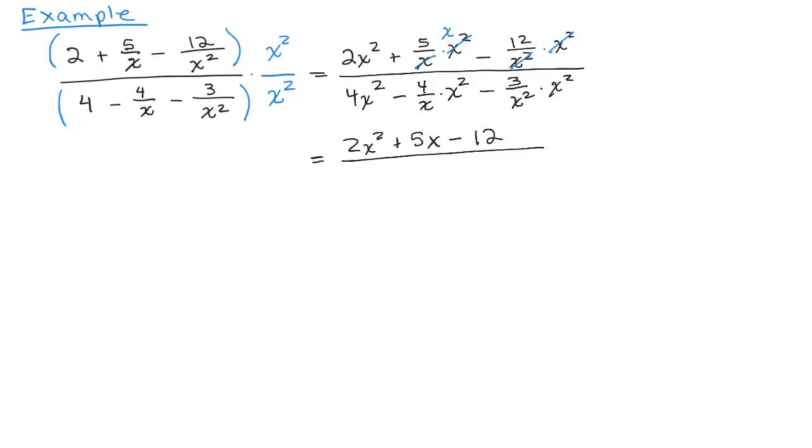All right. Same thing in the denominator. We have 4x squared. If we're over x times x squared, that will give us 4x because one of those will cancel. And we'll just have 4x, and then both of these x squares will cancel. So we have minus 3.